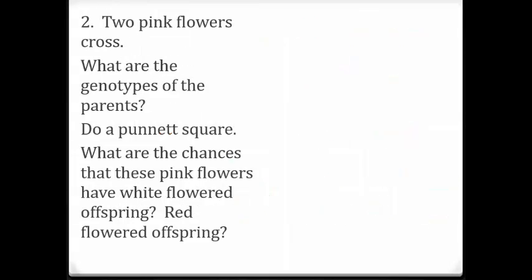Now in this case, we have two pink flowers that are going to cross. We do want to know the genotypes of the parents. That's question number one. So pink, if you look back at your previous example, was a red allele with a white allele. So we have to have one of each. And it says that there are two pink flowers, so that's why we're doing this a second time. Parent one and parent two are the same. So there's the genotypes of the parents. We have that completed, and now we need to do a Punnett square.